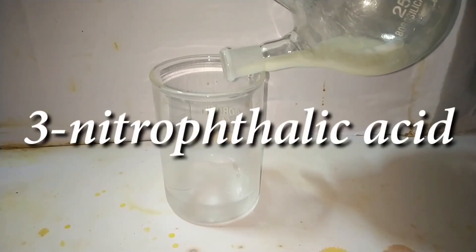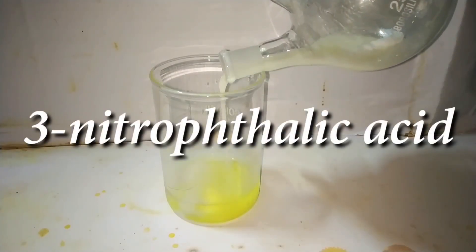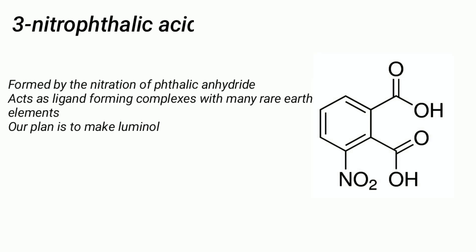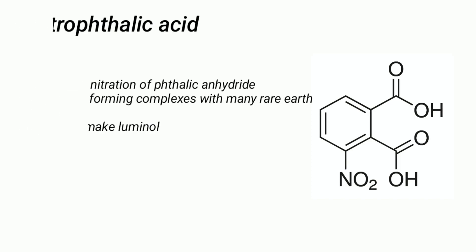Hello friends. In this video, we make 3-nitrophthalic acid. 3-nitrophthalic acid is formed by the direct nitration of phthalic anhydride. It acts as a ligand forming complexes with many rare earth elements. Our plan is to make luminol.